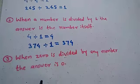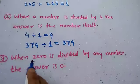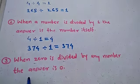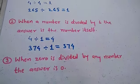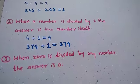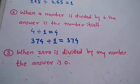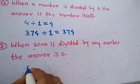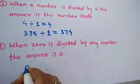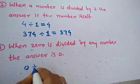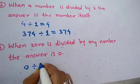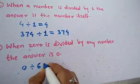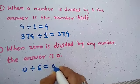Now the third property: when 0 is divided by any number, the answer is 0. Let's look at an example — 0 divided by 6 is equal to 0.